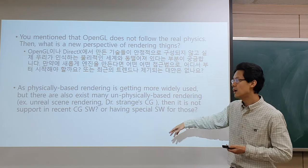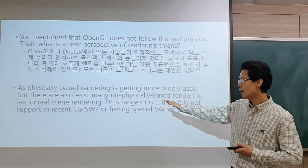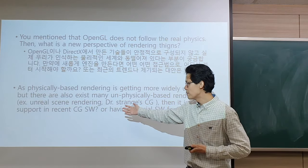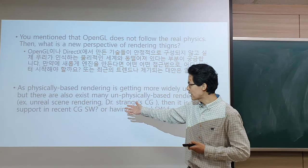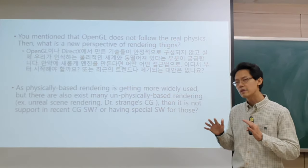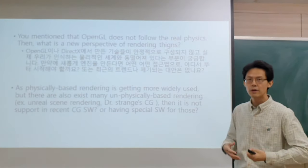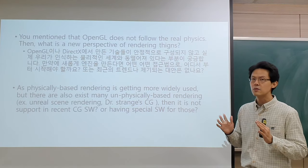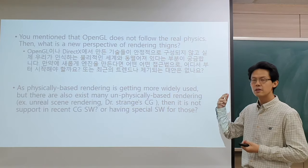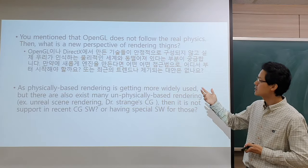Another student asked that as physically-based rendering is getting more widely used, there are also many non-physically-based rendering approaches — like the unreal scene render, or the Dr. Strange CG effects. If you look at that movie, some of the effects are not really physically-based — it's more like a special effect. It may not follow physics. That's why we need imagination in games and movies. There could be very different rendering styles other than physically-based ones.